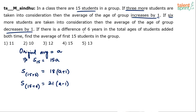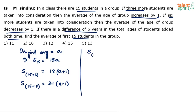Now the next condition: the difference is 6 years in the total ages of students added both times. This means the sum of ages of the 21-student group minus the sum of ages of the 18-student group equals 6 years. So: sum of (15 plus 6) students minus sum of (15 plus 3) students equals 6.